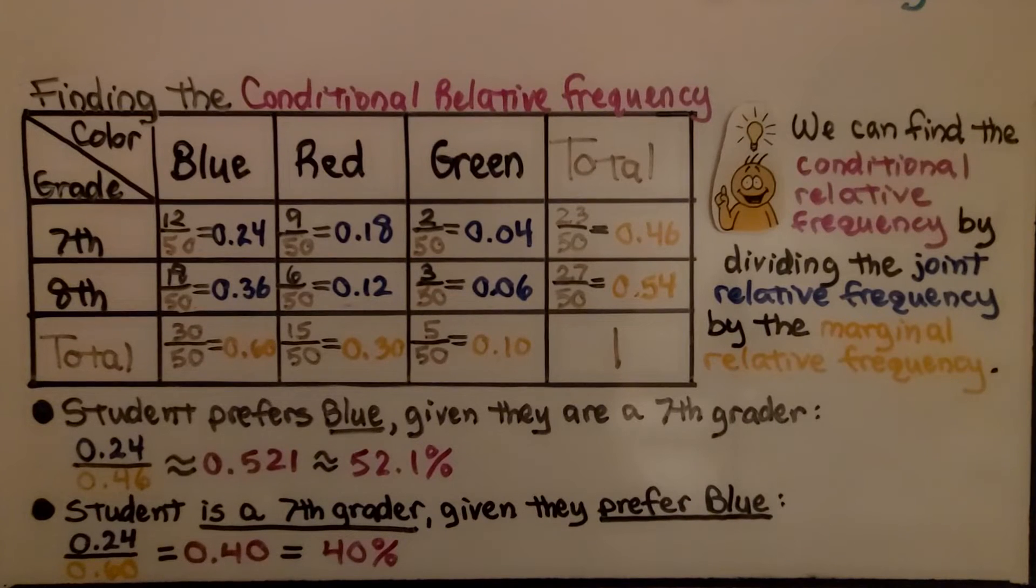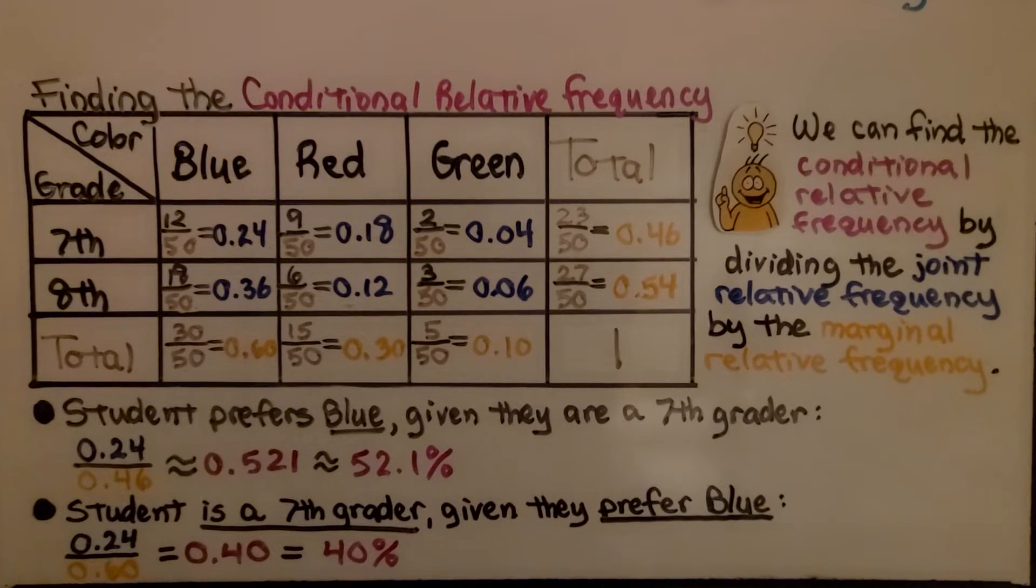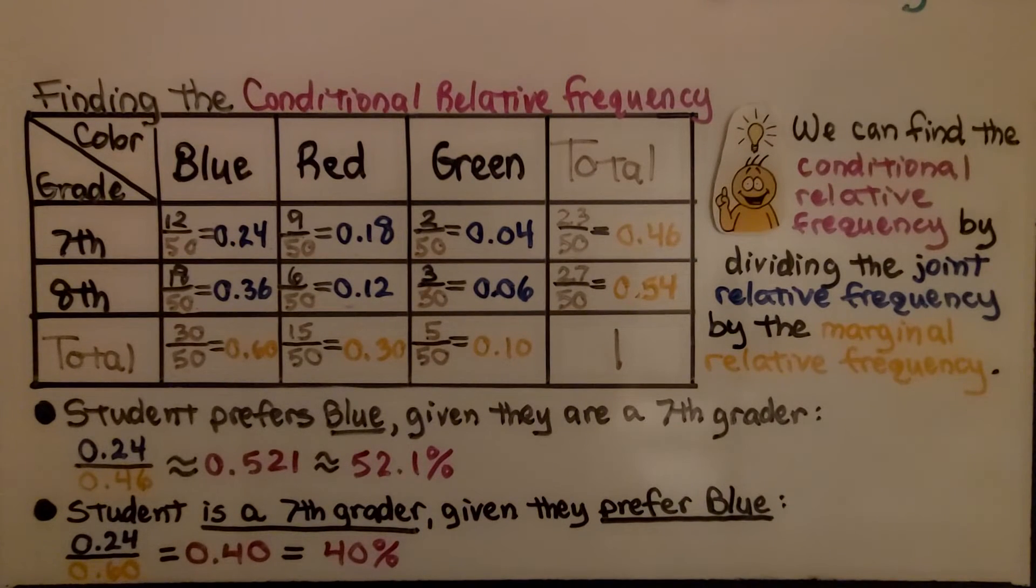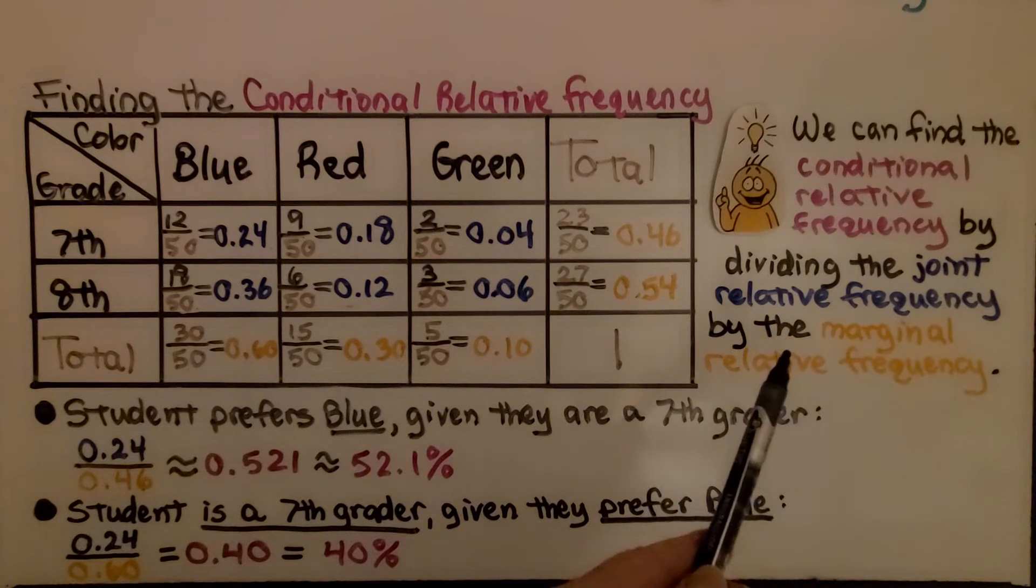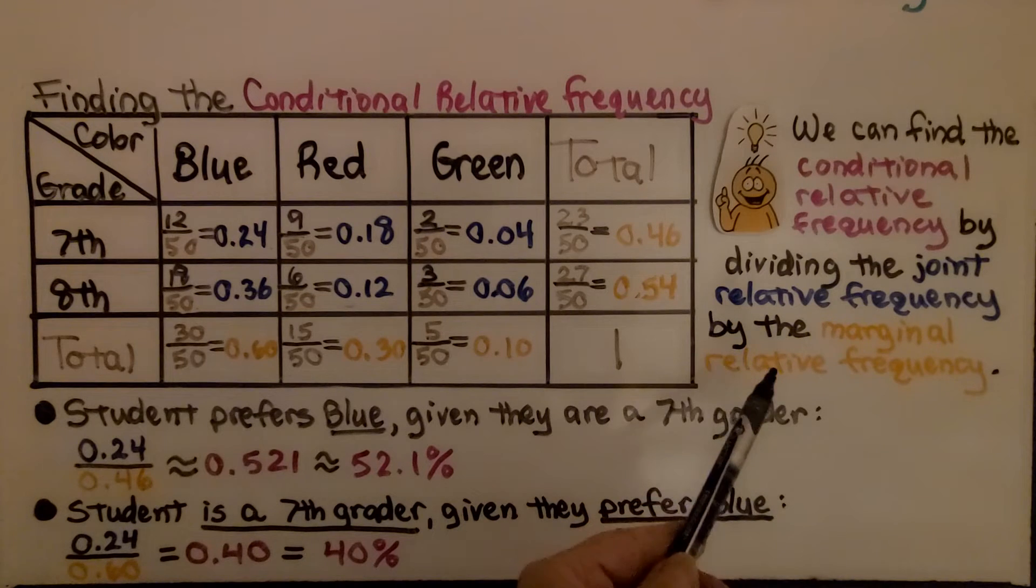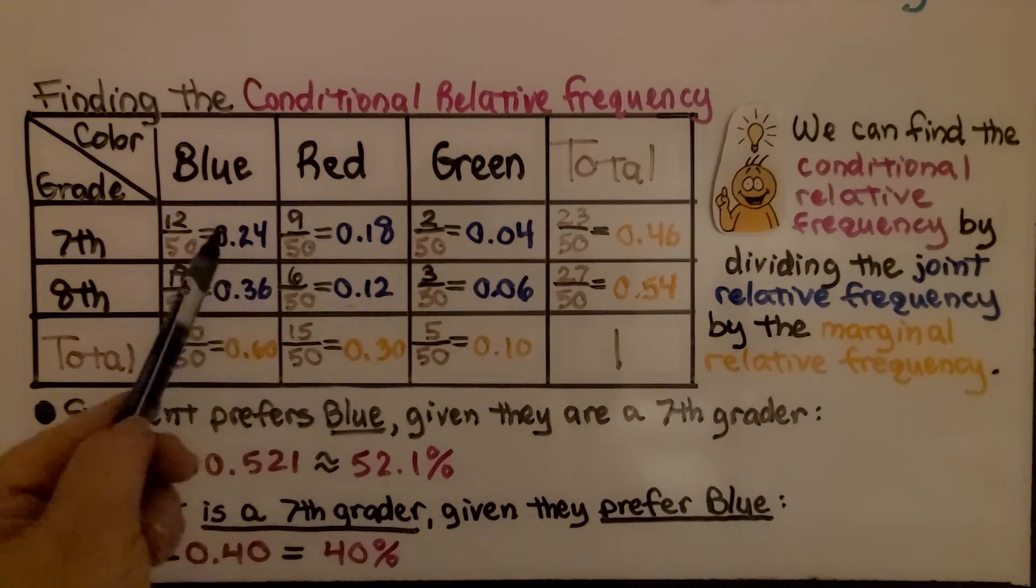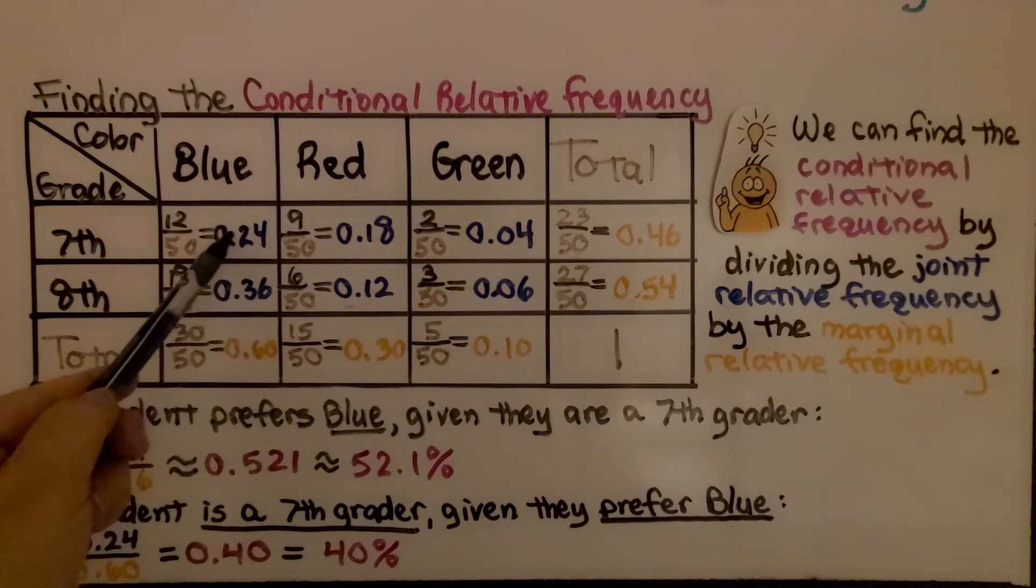Now actually, here's another way, and I find this way less confusing, easier to understand. For finding the conditional relative frequency, we can find it by dividing the joint relative frequency, that decimal number,